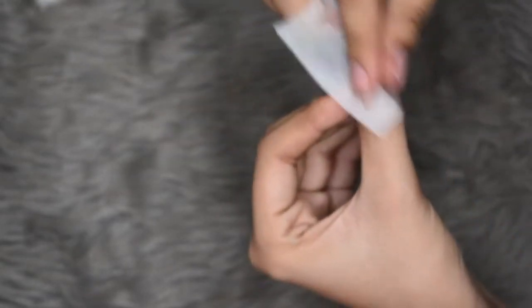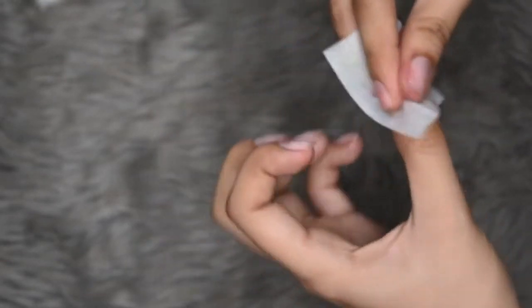So now I'm getting a lint-free wipe with alcohol and just removing any oil left on my nails. You want to dry out the nails as best as possible to allow the glue to adhere better.